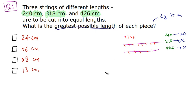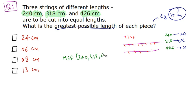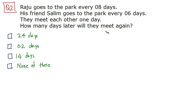The reason is that 240 is divisible by 10, but 318 and 426 are not. So you need to take a common factor of these three numbers, and for the greatest possible length, that number should be the highest common factor. The HCF of 240, 318, and 426 comes out to be 6, so our answer is option B: 6 centimeters.